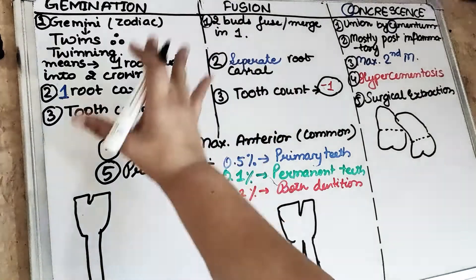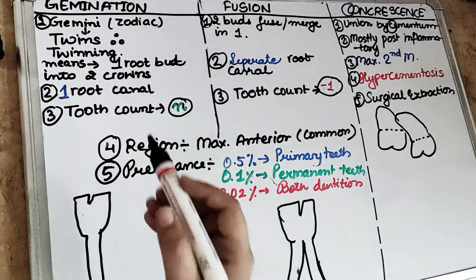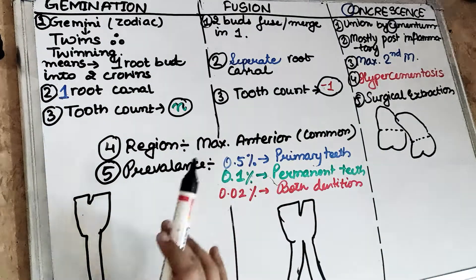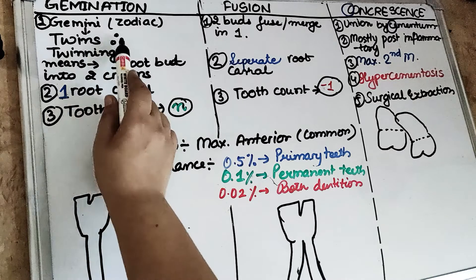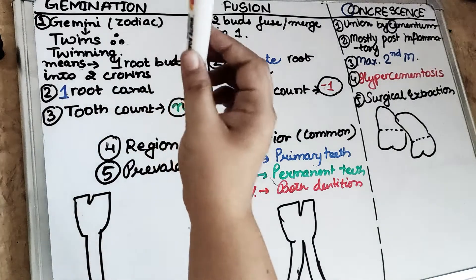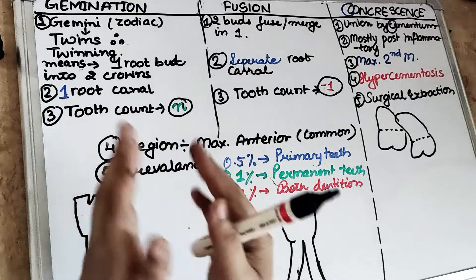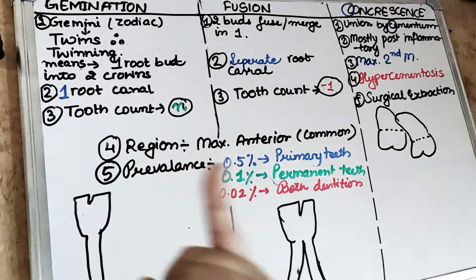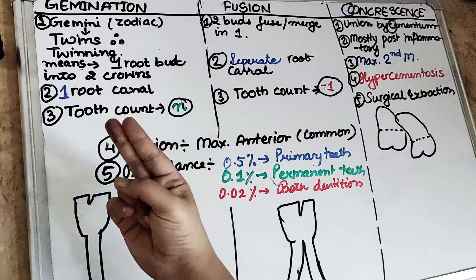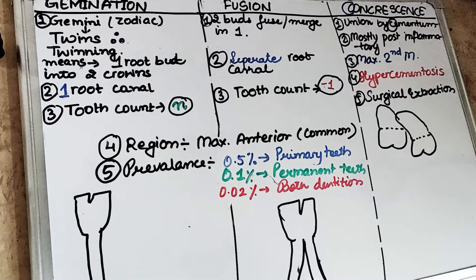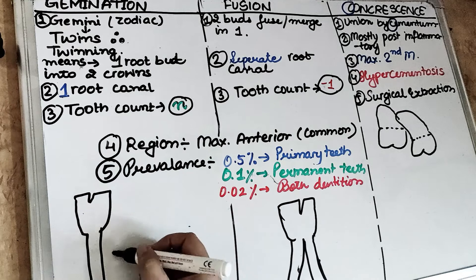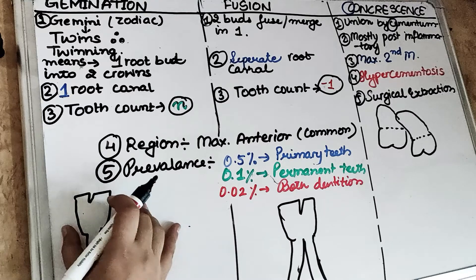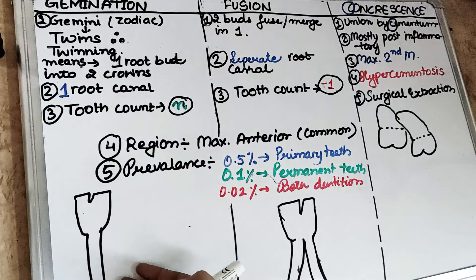Gemination — as the word suggests, think of Gemini, the zodiac sign. If you look at the picture of that zodiac sign, it represents the twins, meaning twinning. So there is going to be one root but it will split into two crowns. The first point is: gemination is twinning where one root splits into two crowns. Because of that, there is going to be one root canal present in most cases, since the crown is splitting into two. So the second point is: there is going to be one root canal.